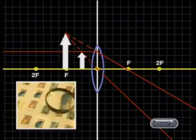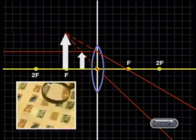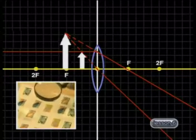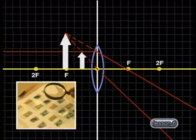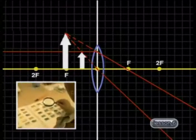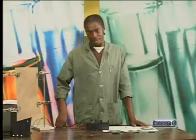When a converging lens produces this type of image, we call it a magnifying glass. A mirror producing this type of image is often called a shaving mirror.